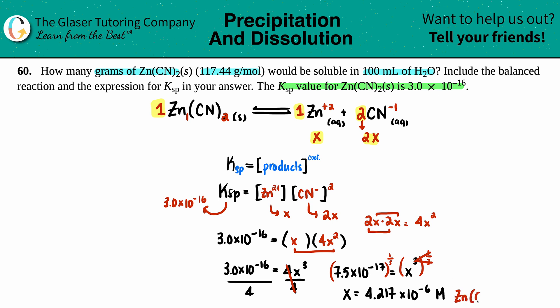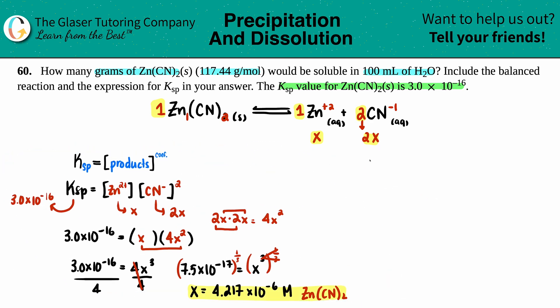I still want to find the grams and I have a molarity. What formula do I know with molarity? Molarity equals moles divided by liters. I have the molarity value, 4.217 times 10 to the negative 6th. They gave me milliliters, so I convert 100 mL to liters by dividing by 1000, which is 0.100 liters.